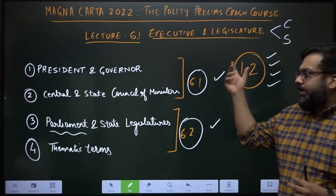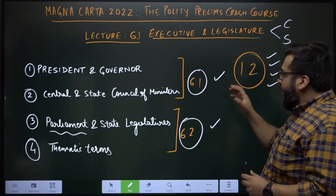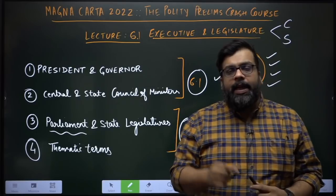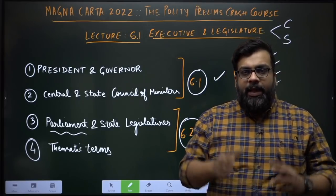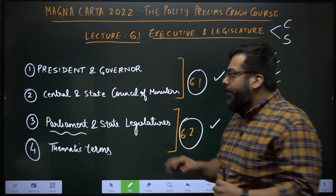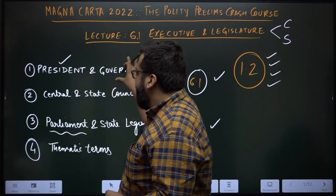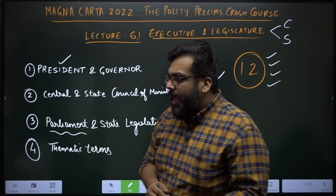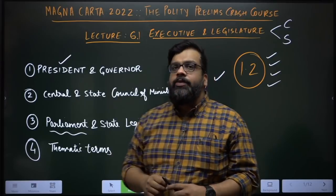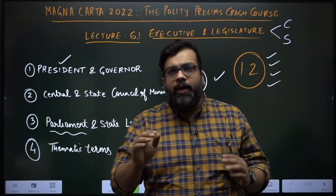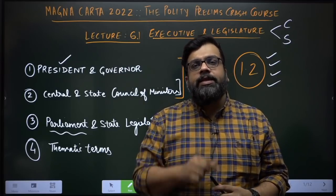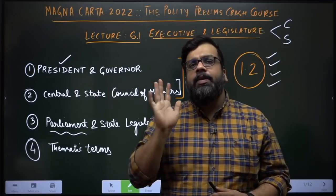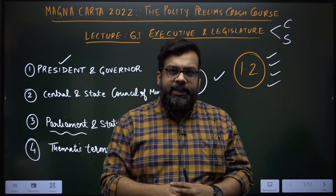This phase is divided into two lectures. In lecture 6.1, I will cover the President, the Governor, and the central and state council of ministers. We will study the President in more detail than the Governor due to greater exam relevance, and the council of ministers in a focused but selective fashion covering only what is absolutely relevant.